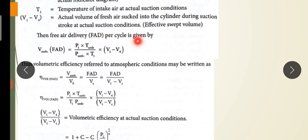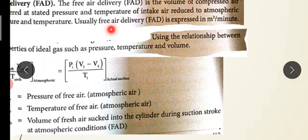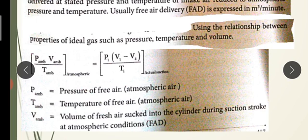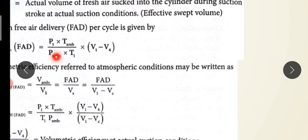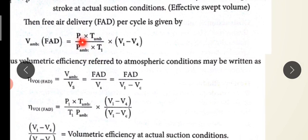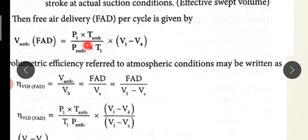Free air delivery per cycle is given by FAD, which equals V ambient — the volume of air sucked into the cylinder at ambient atmospheric condition. The equation is: P1 times (V1 minus V4) divided by T1, equated with P ambient times V ambient divided by T ambient. Rearranging, V ambient equals P1 times T ambient divided by (P ambient times T1) times (V1 minus V4).